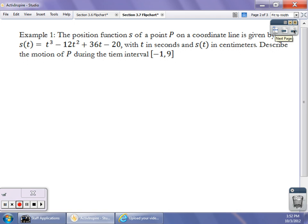So what we're going to look at is the position function S is given to you as S of T equals T cubed minus 12T squared plus 36T minus 20. And we want to describe what's going on with P during the time period. Oh, there's another typo. From negative 1 up to 9. So in this time frame or in this time period, the first thing I want to do is look at the velocity.